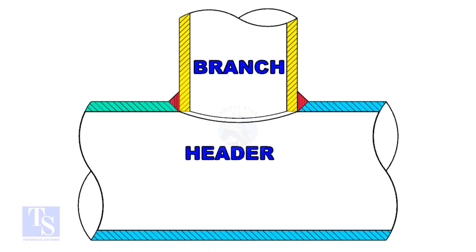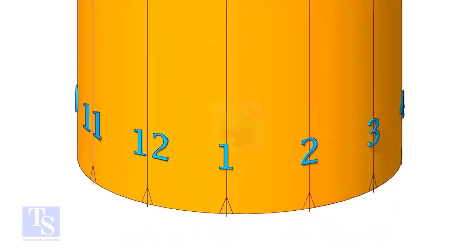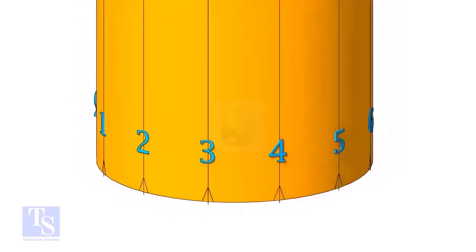In this method, the branch size shall be 2 to 3 inches less than the header size. Divide the branch pipe into equal parts. In this case, I divide the pipe into 12 parts.